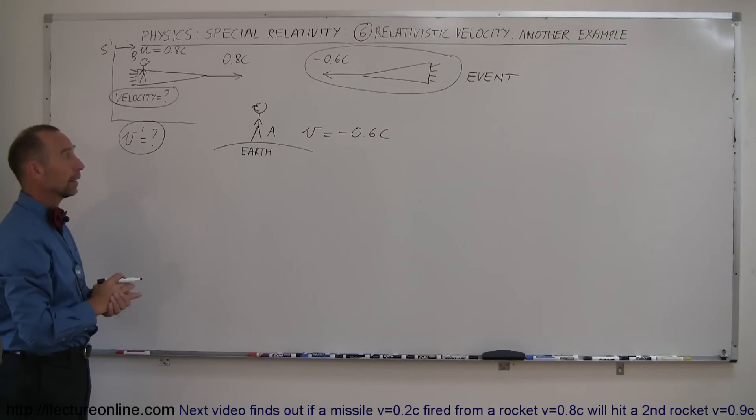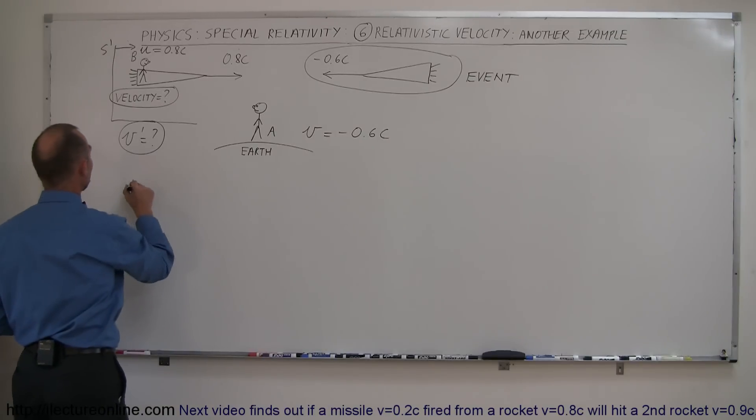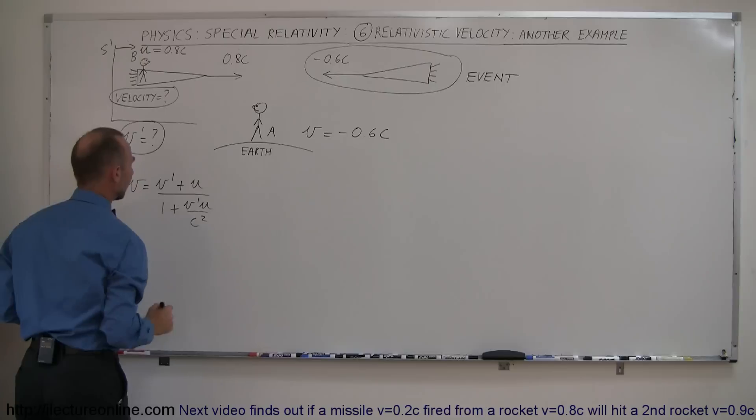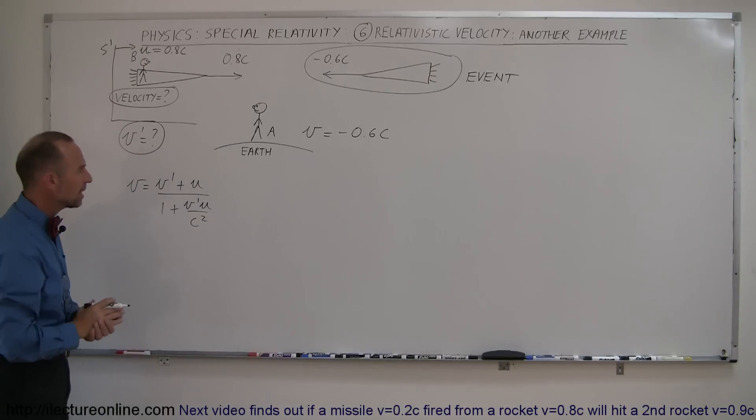We're ready to go. Well, the first thing we want is the equation to relate these three things to each other. And we know that V is equal to V' plus U over 1 plus V'U over C squared. Now, the problem here is we're not looking for V, we're looking for V', which means we have to take this equation and solve it for V'. So let's do that.